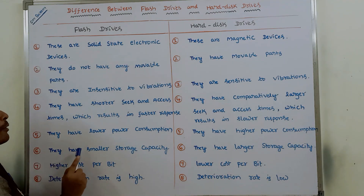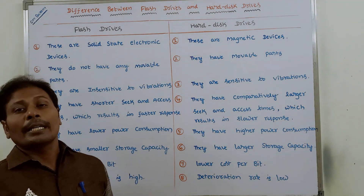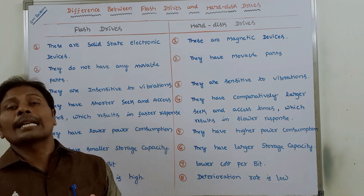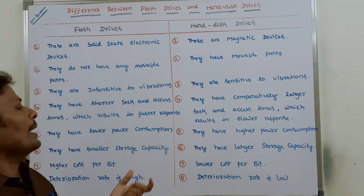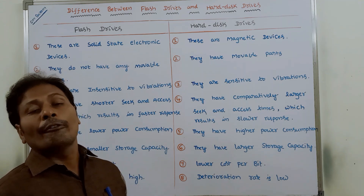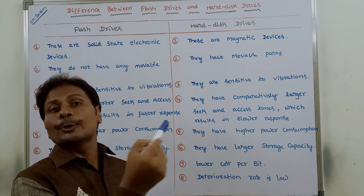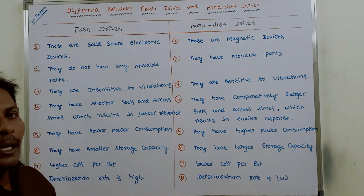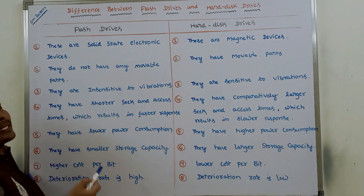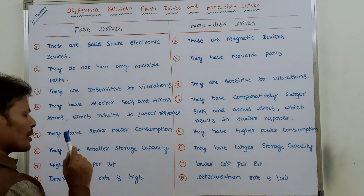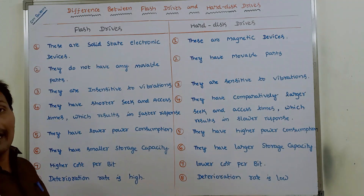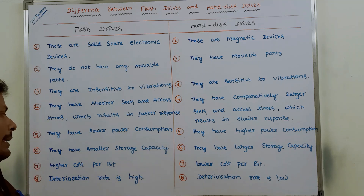The sixth point is storage capacity. Flash drives have smaller storage capacity — they can store only a limited amount, approximately less than 1 GB. Whereas hard disk drives have larger storage capacity, storing up to 500 GB, 1 TB, and 2 TB. So the storage capacity of a hard disk drive is large, whereas for flash drives it is less than 1 GB.